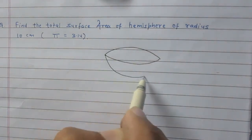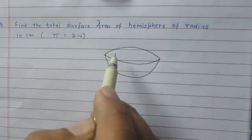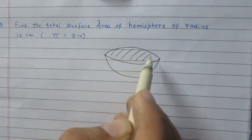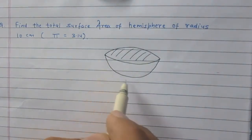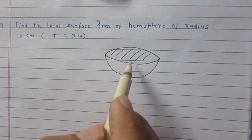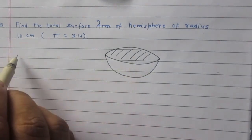A solid hemisphere consists of two types of area. One is curved surface area and other is plane surface area.